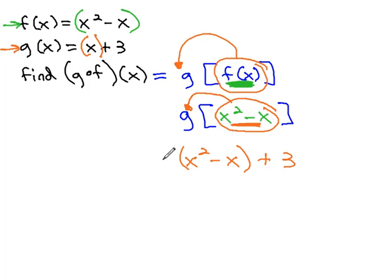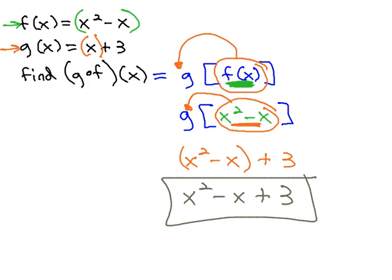And to simplify, we can just drop the parentheses, because there's nothing to distribute. Technically a 1, I guess. x squared minus x plus 3 is the composition g of f of x, where we take f and plug it into the g function.